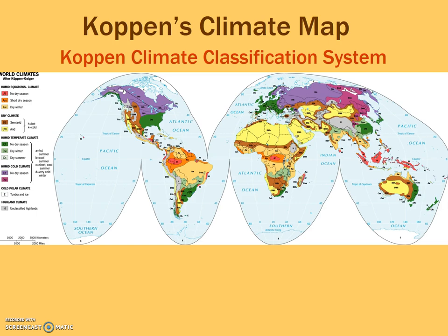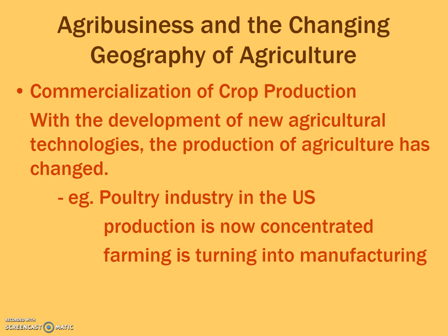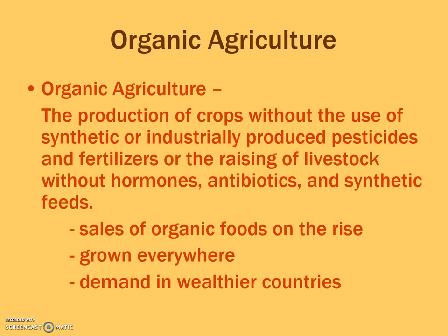In terms of agribusiness, we want to talk about the effects it has had on the world both on a national and global scale. It has impacted US production — for example, the poultry industry is very concentrated with only a few companies controlling it. Tyson, for instance, owns not only the farms where chickens are raised, but also the processing plants where the meat is extracted, and even the factories that turn that chicken meat into nuggets you buy at the grocery store. All parts of that industry are controlled by certain companies — that's agribusiness.